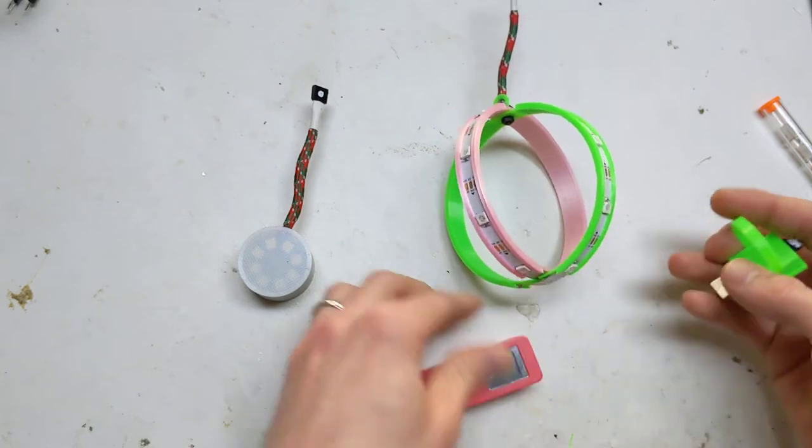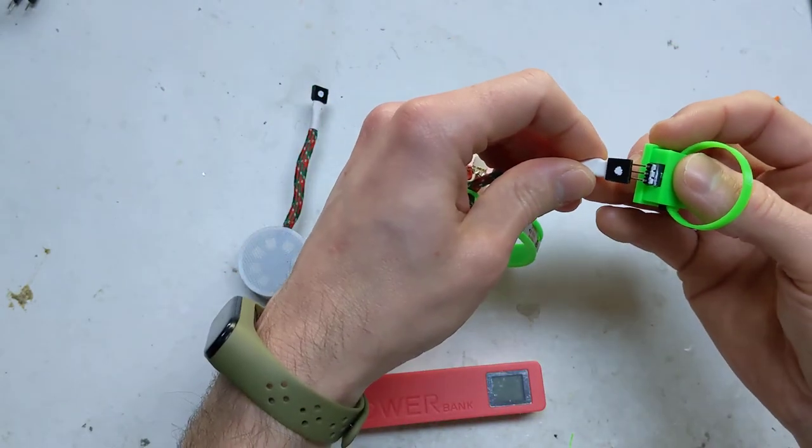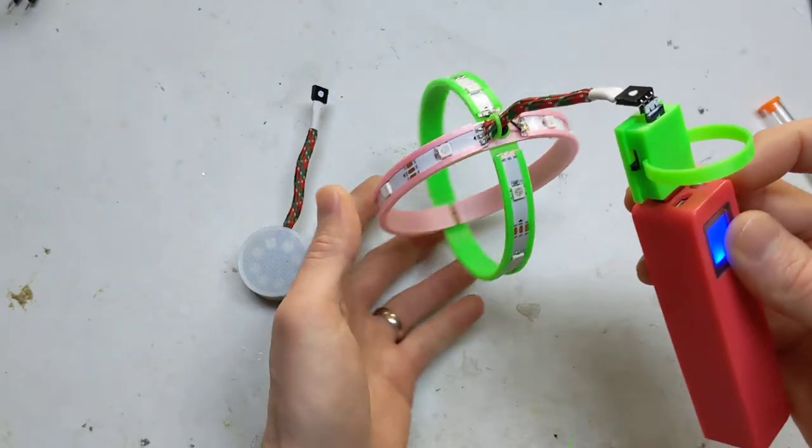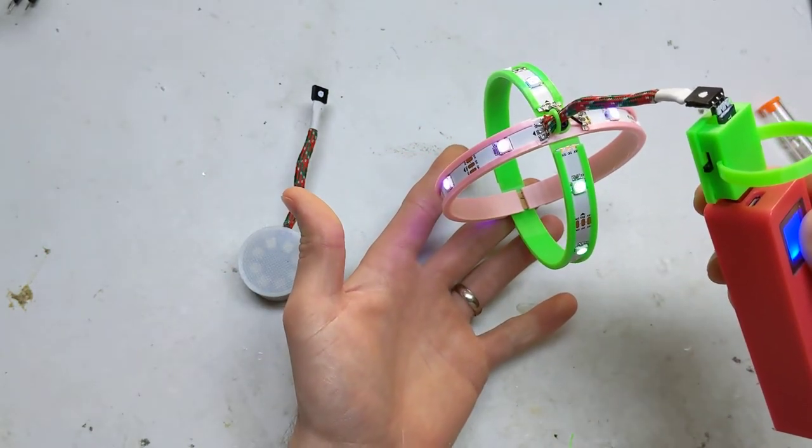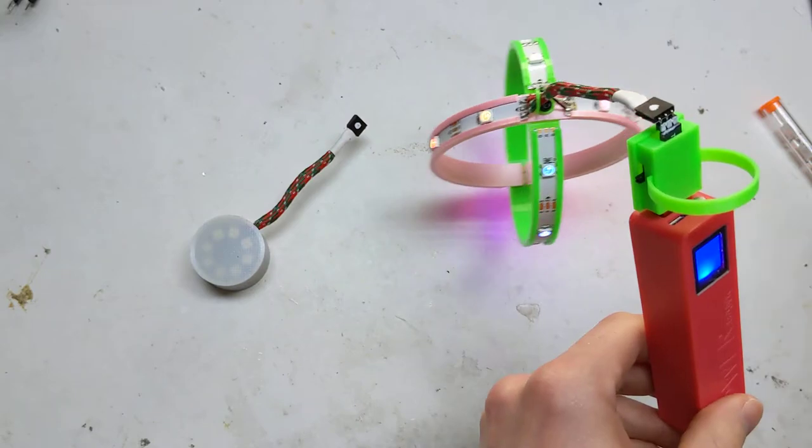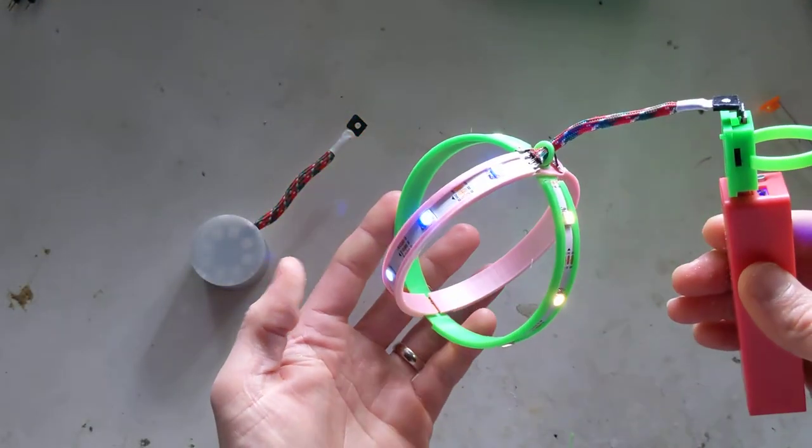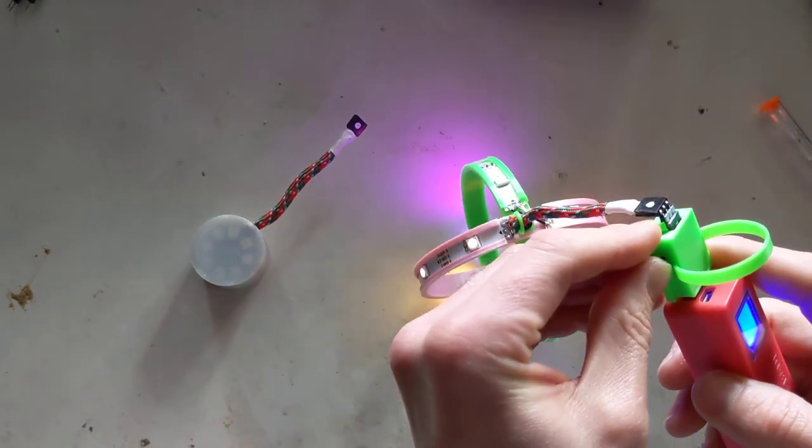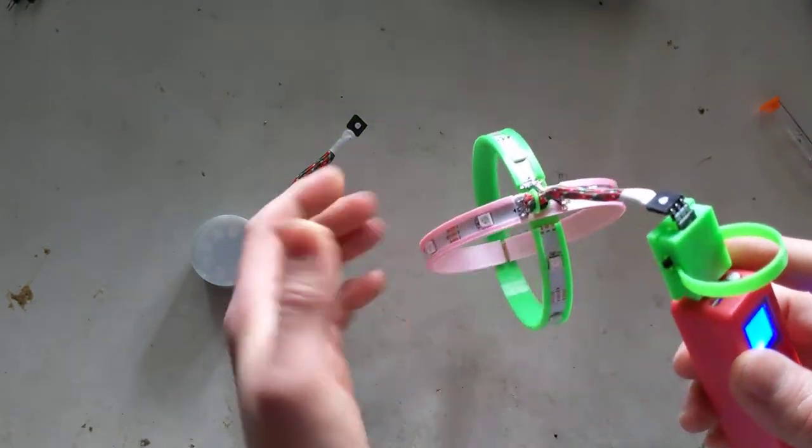Let me turn the lights off so you can see it better. There's three different modes. I've used the FastLED library on this one.